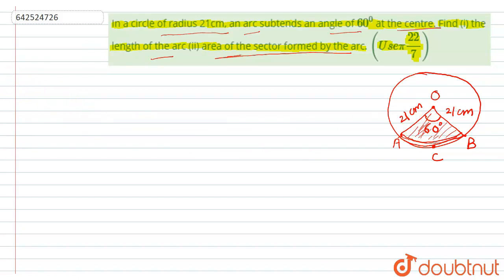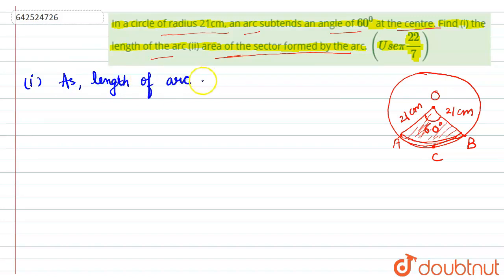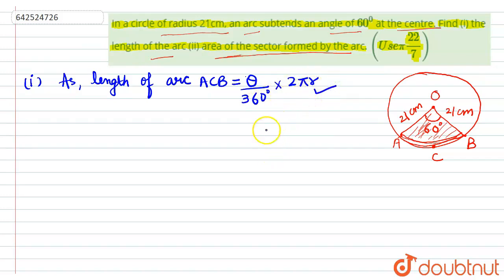For solving this question we will need some formulas. For the first part, the length of arc ACB is given by the formula: theta upon 360 degrees, multiplied by 2πr. This is the formula for finding the length of an arc in a circle. Here, theta is the angle subtended at the center, which is 60 degrees.